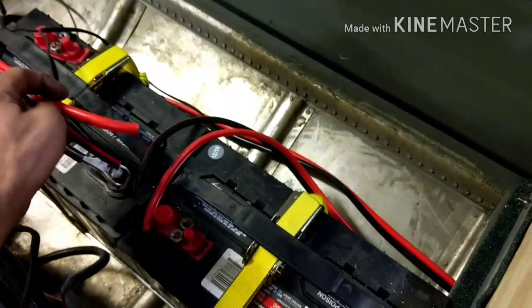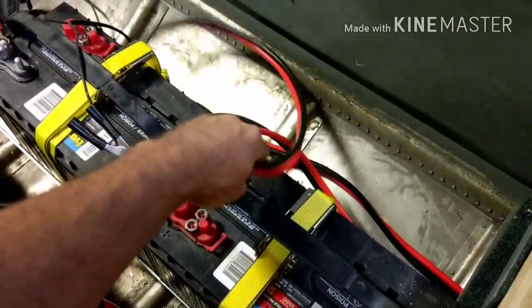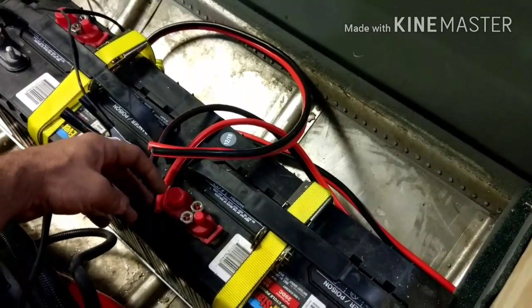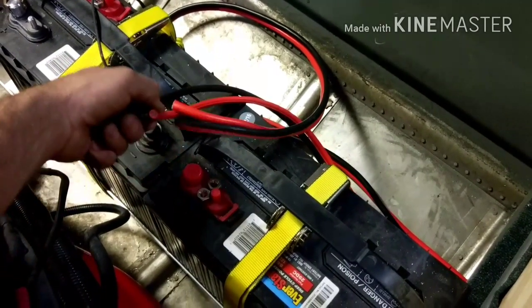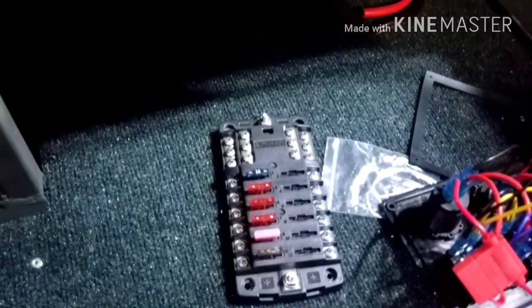And now we have the 6 gauge, it goes all the way up to the front by the trolling motor. And then the 8 gauge here goes over underneath the dash right there, and that's going to hook right to the fuse panel. And here we have the back of the switch panel.